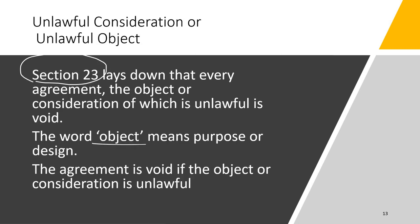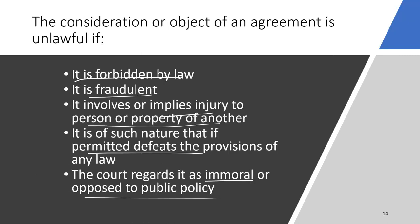Regarding unlawful consideration or unlawful object, Section 23 lays down that every agreement whose object or consideration is unlawful is void. If the consideration or object — or both — are unlawful, the agreement is void. The word 'object' means purpose or design. An agreement is void if its object or consideration is forbidden by law, fraudulent, causes injury to someone or their property, defeats provisions of any law, or is against public policy or immoral.